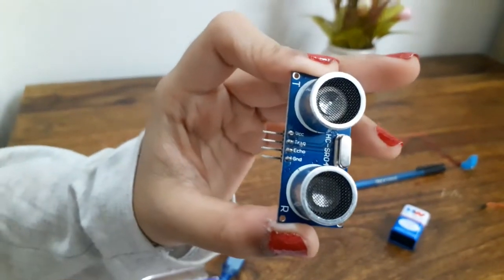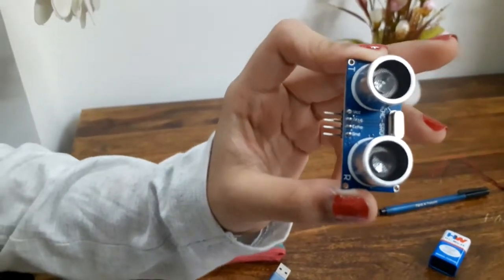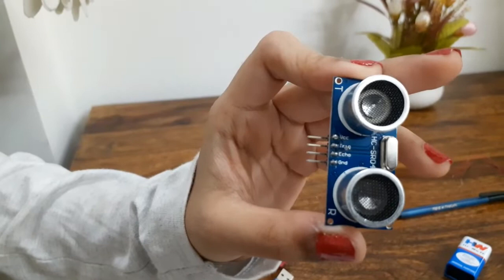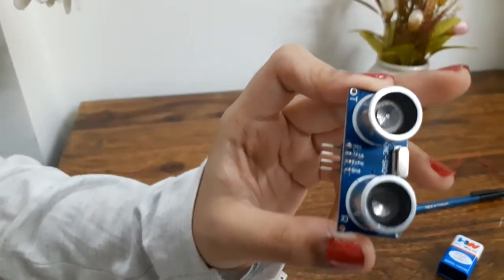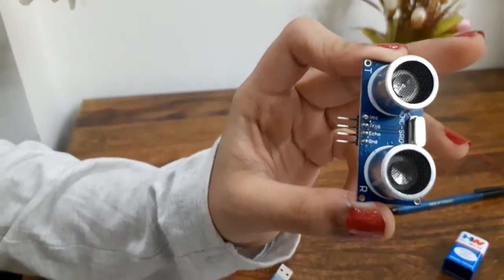Echo - this pin is an output pin. This pin goes high for a period of time which will be equal to the time taken by the ultrasonic wave to return back to the sensor. Ground - this pin is connected to the ground of the system.